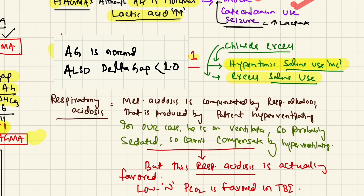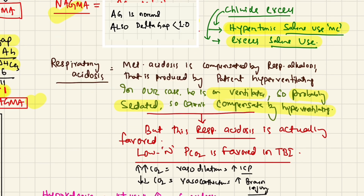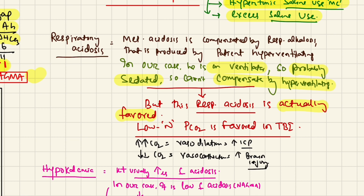Regarding the respiratory acidosis: normally when a patient is acidotic, respiratory alkalosis compensates through hyperventilation. However, our patient is on a ventilator and is likely sedated, so he cannot hyperventilate to compensate. Importantly, this respiratory acidosis may actually be intentional. In traumatic brain injury, a low-normal pCO2 is preferred — a higher CO2 causes vasodilation and raises ICP, while a very low CO2 causes vasoconstriction and ischemia. The pCO2 of 35 in our case is actually ideal.